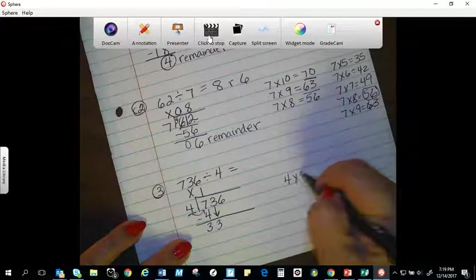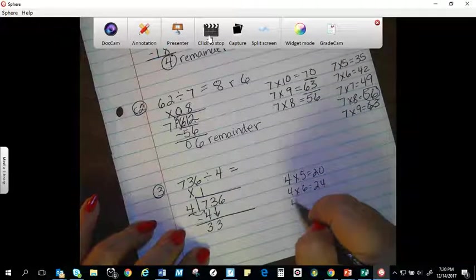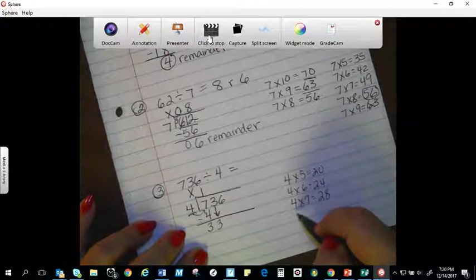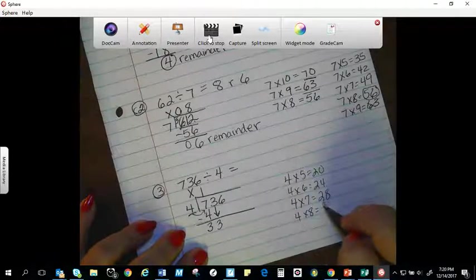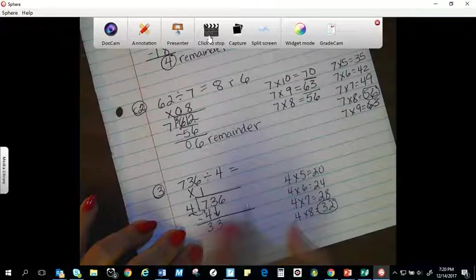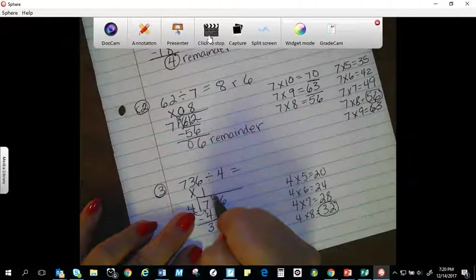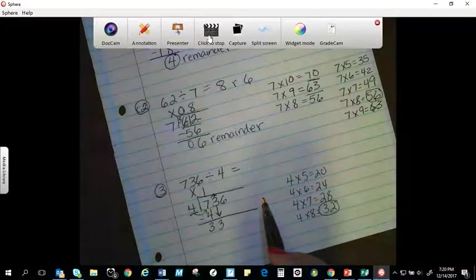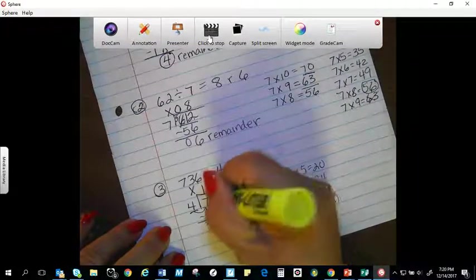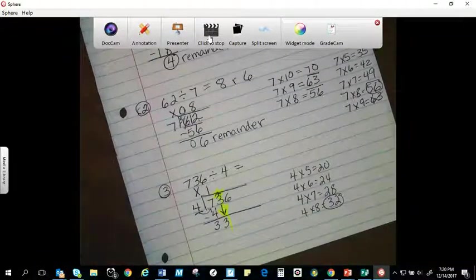Now four times what will get me close to 33 without going over? I know four times five equals twenty. Four times six equals twenty-four. I'm getting closer. Four times seven equals twenty-eight, so I'm adding groups of four. Four times eight equals thirty-two. That's pretty close. If I add another group, it's going to bust the bank. So I'm going to put my eight right on top of where I'm at. I'm going to highlight that one for you. This is where I brought this down, and when I put the number, it's going to be right underneath that, so they kind of all line up right there.